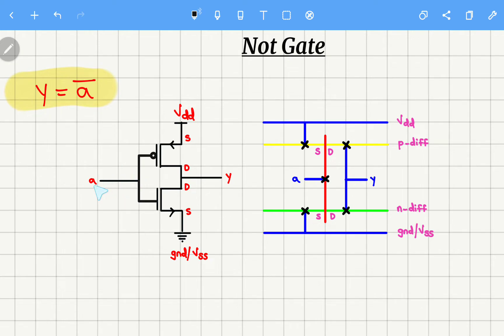And at this common drain point I will take output which is y. And at common gate inputs I will take input which is a. Now we have to convert this particular CMOS schematic into a stick diagram.